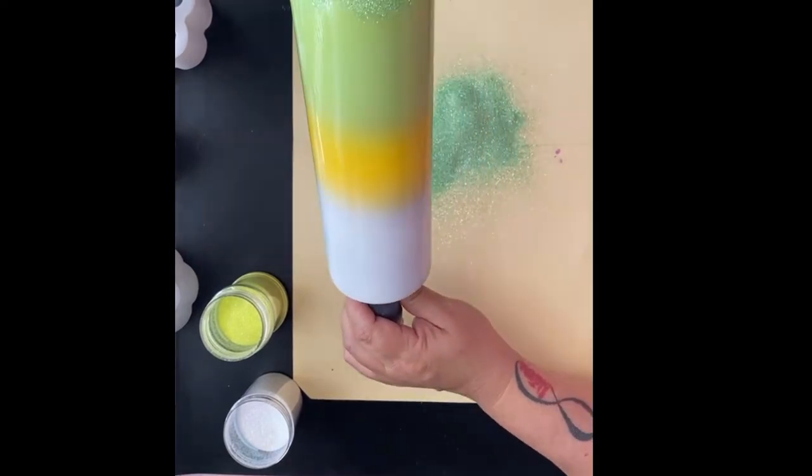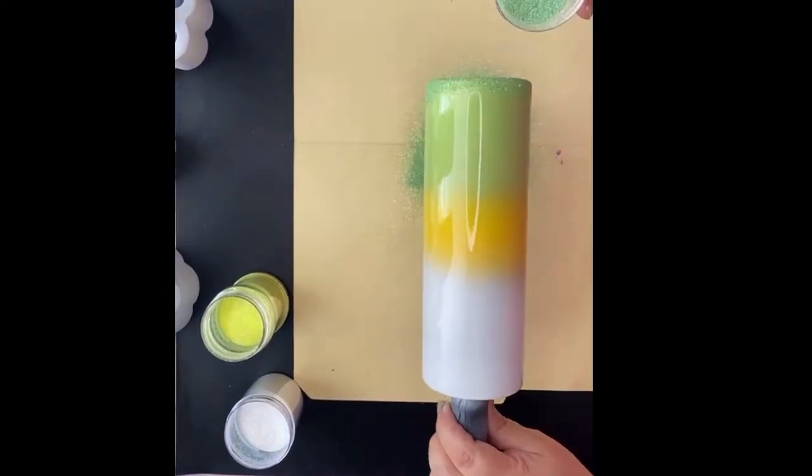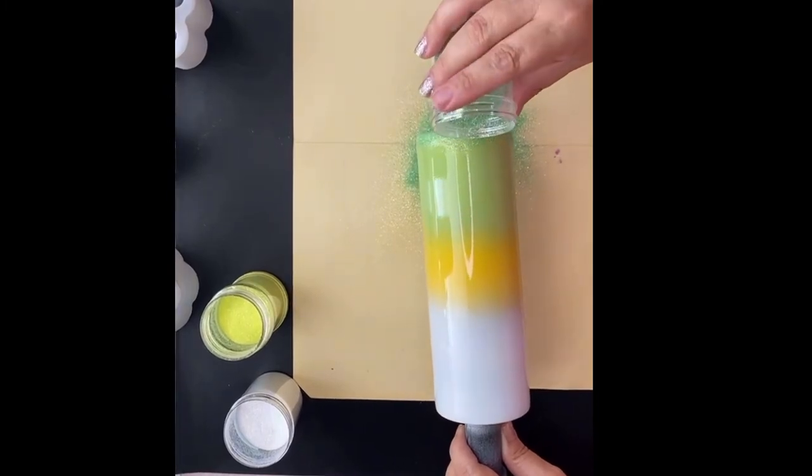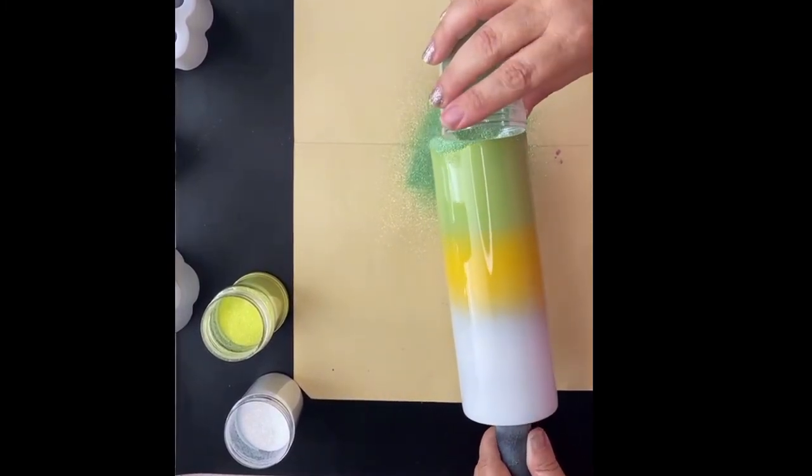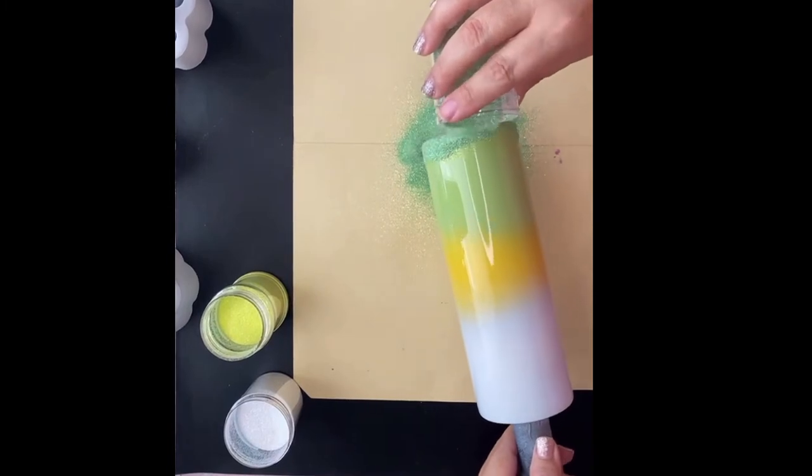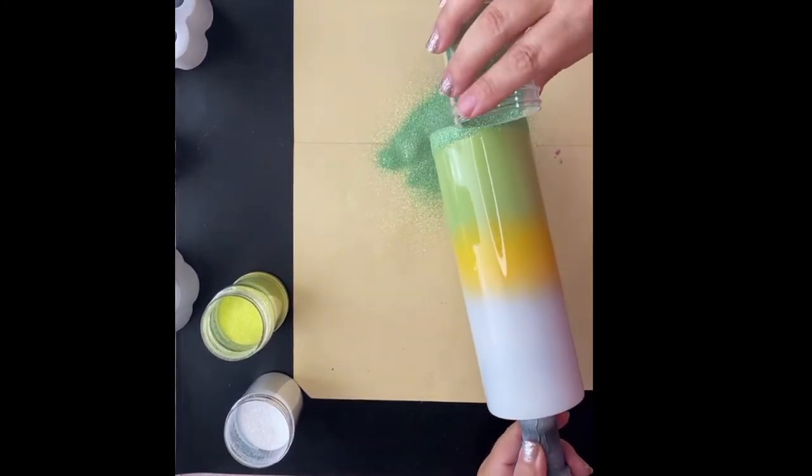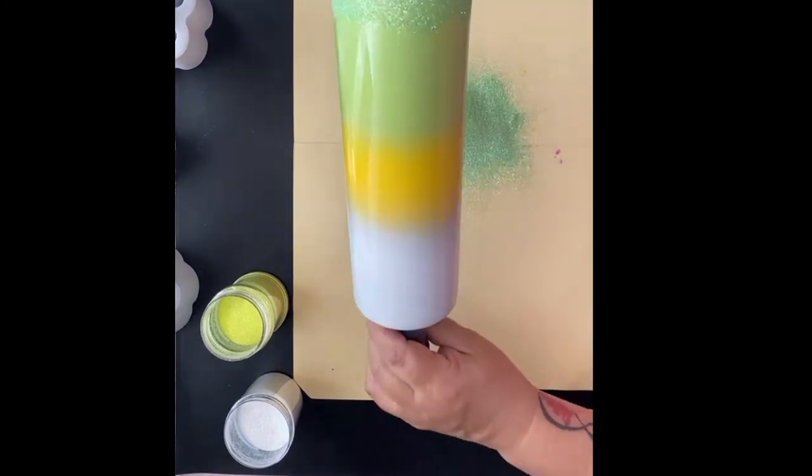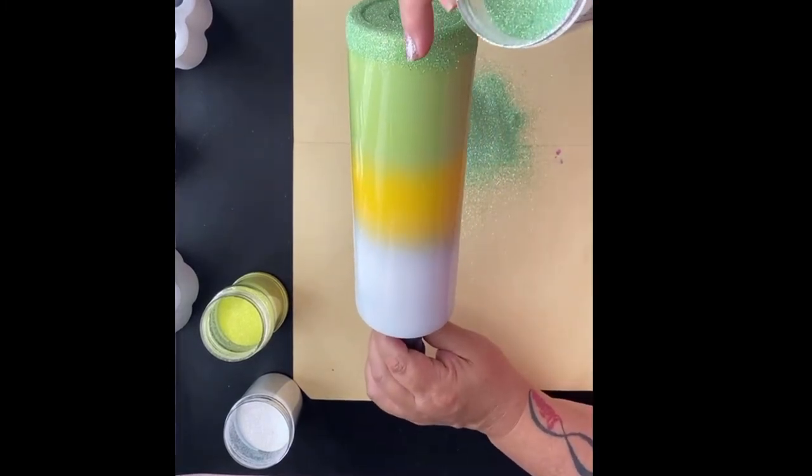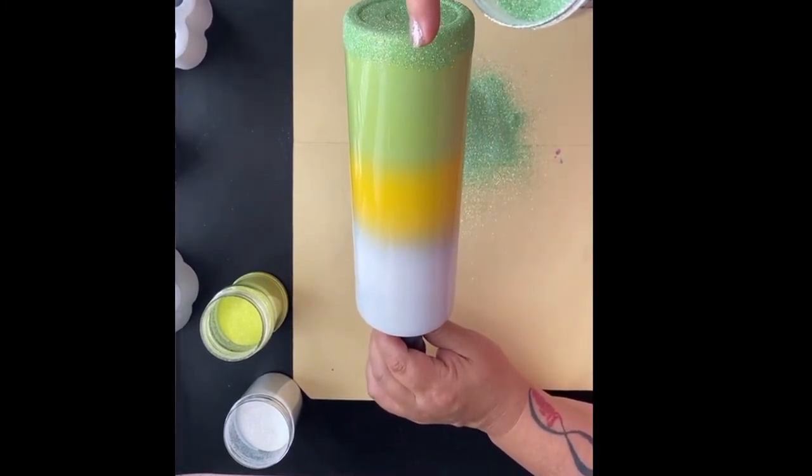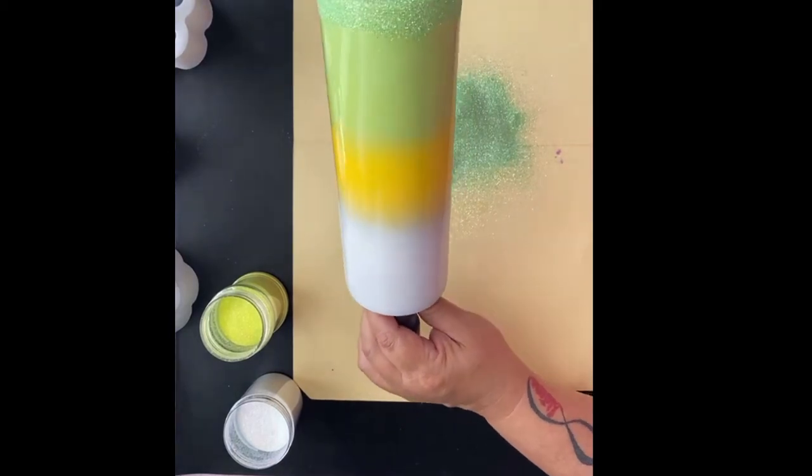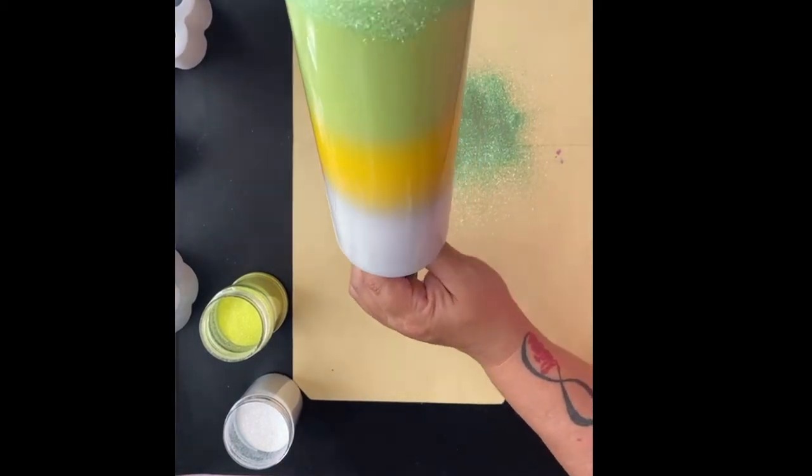I'm going to aim right at that line I created and I'm going to have my tumbler at a tilt, but not tilt it up too far so that the green doesn't go too far down into that yellow. I'm just going to create a thicker line here to help with that and then aim in the same spot all the way around the tumbler and take your time here.